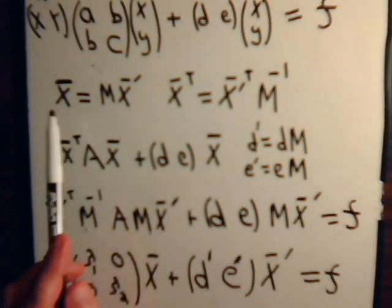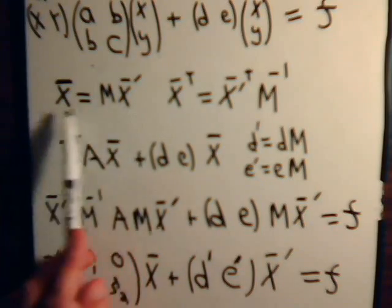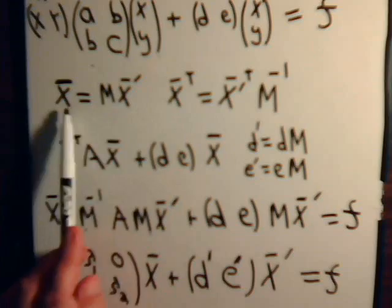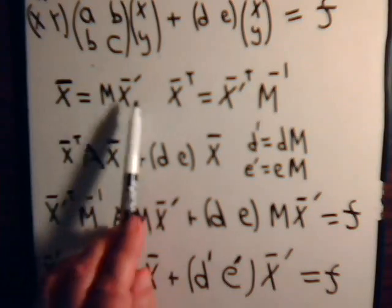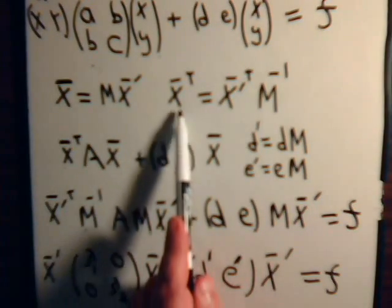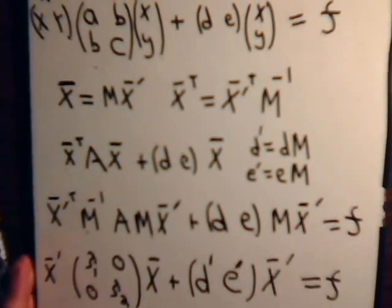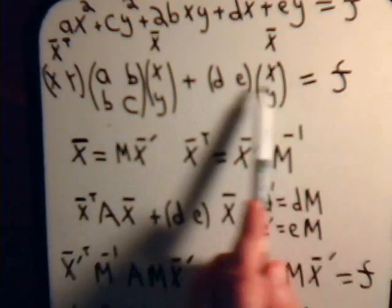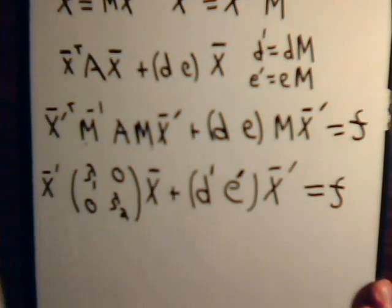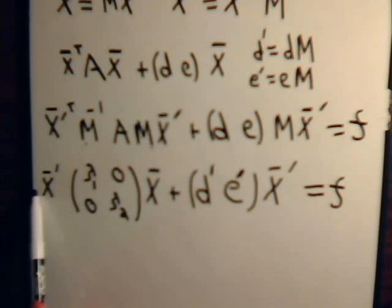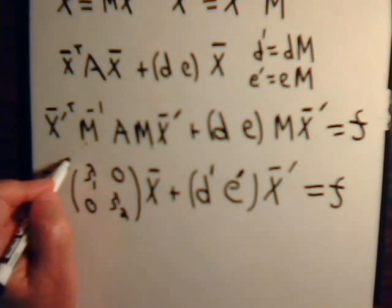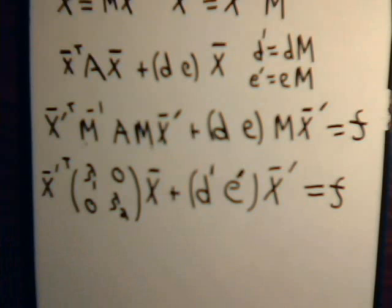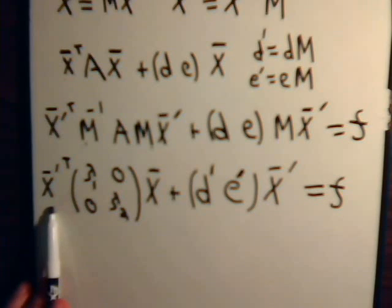With this variable change — and we discussed the philosophy behind this in the last two videos — this variable change leads to a new equation. The matrix part has an x prime and a transpose marker here, which should be x prime transpose as a row vector. We can carry this one step further and write it in component form.